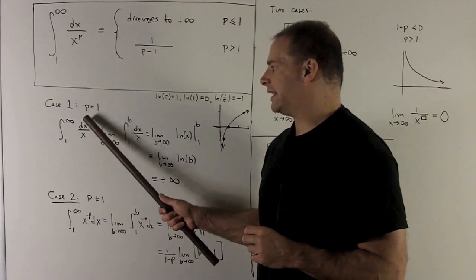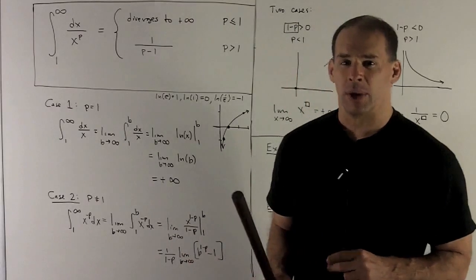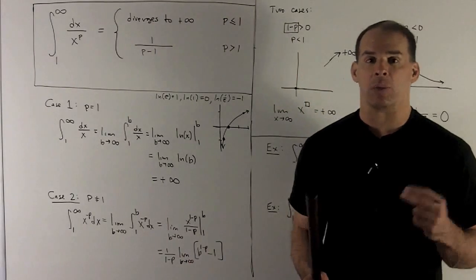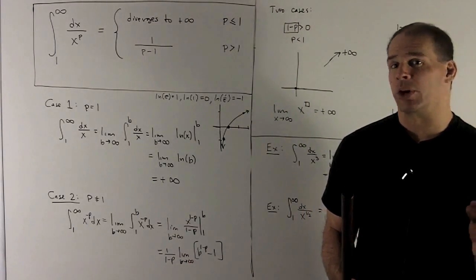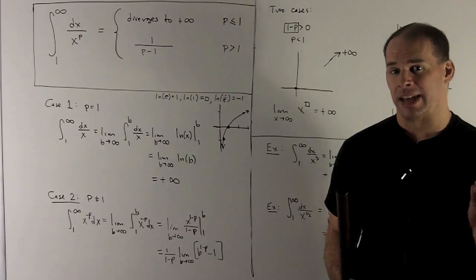If I have p equals 1, I'm looking at dx over x. And when I take the antiderivative of that, add 1, flip it over, it doesn't work. But instead, we're going to use the definition of natural log.